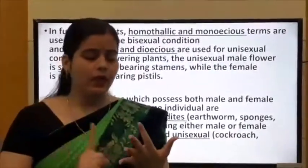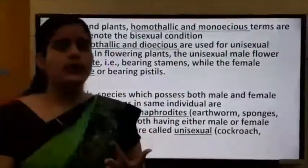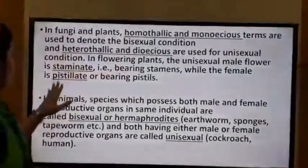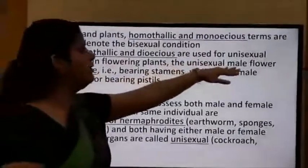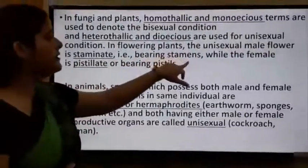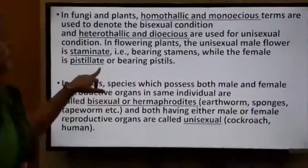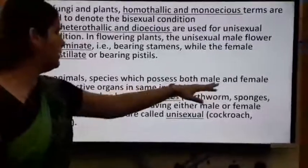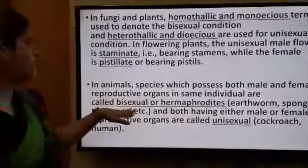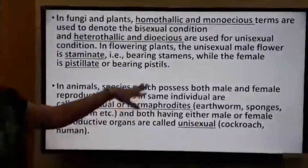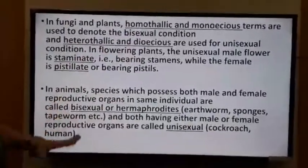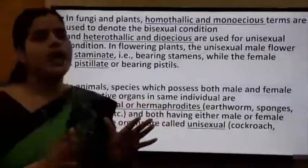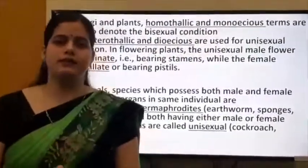In flowering plants, the unisexual male flower is staminate (bearing stamens) while the female is pistillate (bearing pistil). In animals, species which possess both male and female reproductive organs in the same individual are called bisexual or hermaphrodite, as both male and female reproductive organs are present within a single individual.